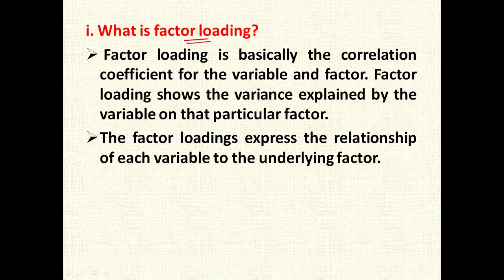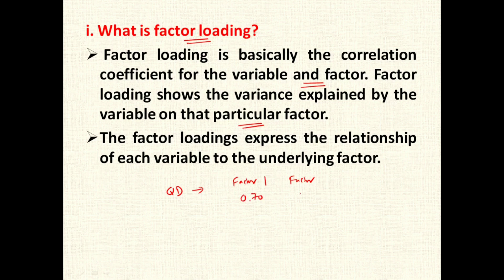What is factor loading? Factor loading is basically the correlation coefficient for the variable and the factor. Factor loading shows the variance explained by a variable on that particular factor. For example, if the quantity demanded of a product is changing, it can change because of a variety of factors — how much each factor is contributing to that change is called factor loading. Factor 1 may contribute 70%, factor 2 may contribute 20%, factor 3 may contribute 5%. It explains how much variance is happening because of each individual factor, expressing the relationship between each variable and the underlying factor.